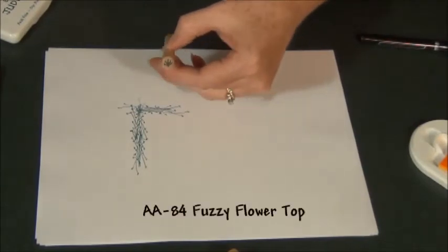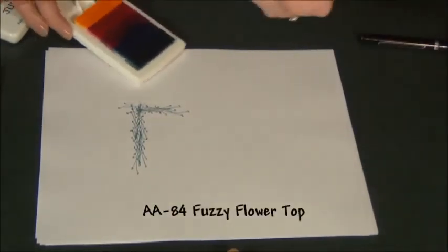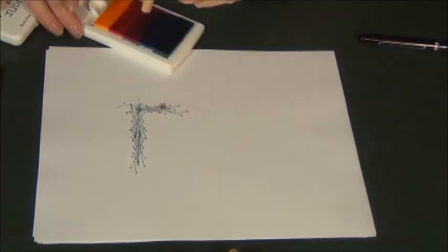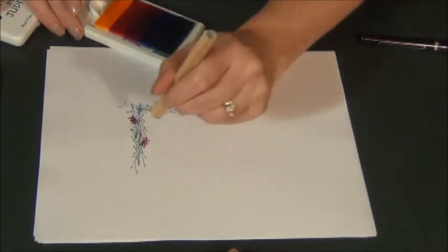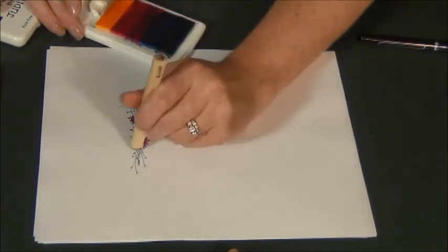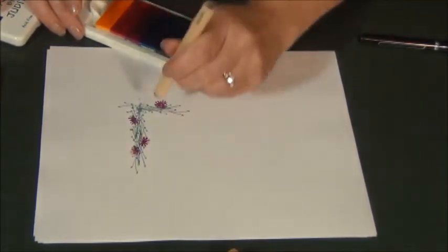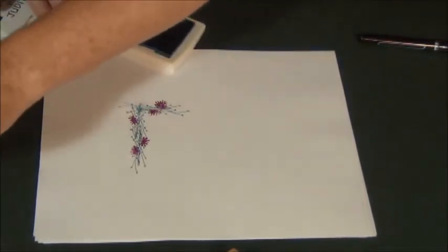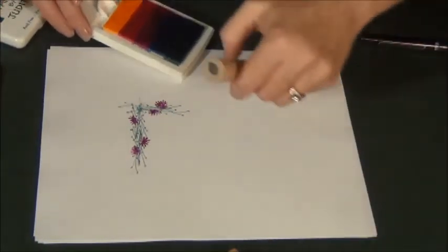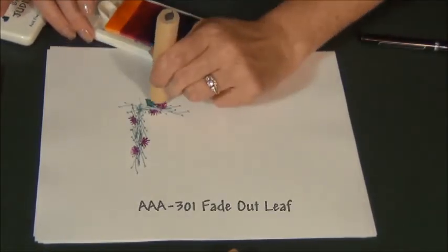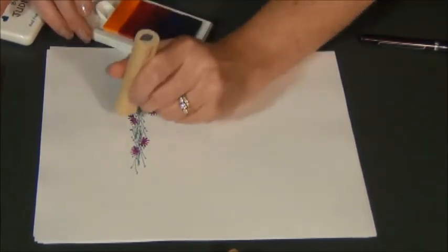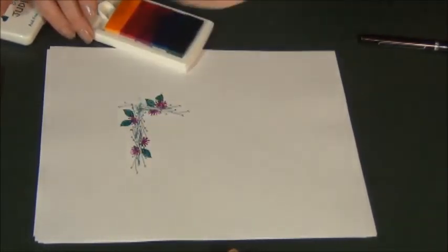I'm going to take this little fuzzy flower top stick, which is one of my favorites. Stamp it multiple times. I'm going to take this great little fuzzy thing. And then my fade-out leaf. There we go. There we go. And my dots.